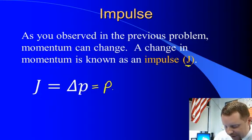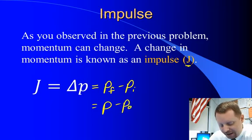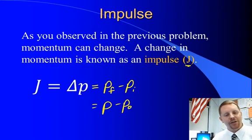And remember that delta anything is always the final minus the initial, or you might write that as the current value minus the initial value. So impulse is just a change in momentum. It too is a vector, it has a direction because momentum changes have direction.